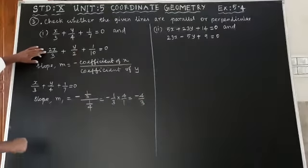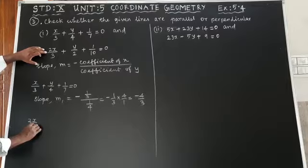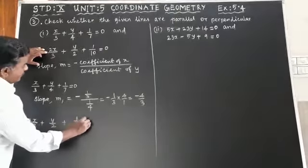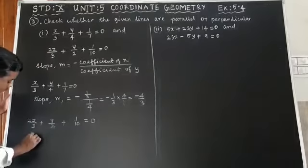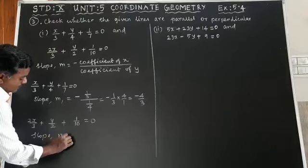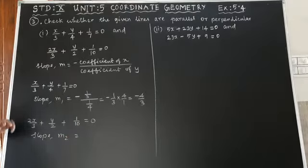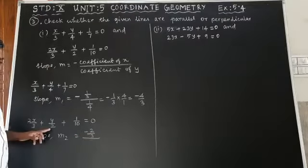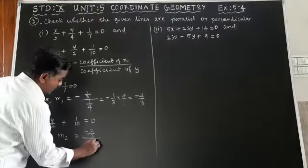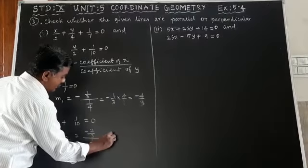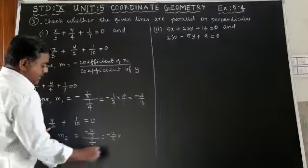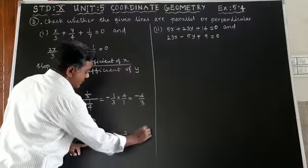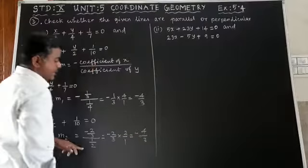For the second equation 2x/3 + y/2 + 1/10 = 0, slope m2 is equal to minus the coefficient of x, which is 2/3, divided by the coefficient of y, which is 1/2. So m2 = -2/3 multiplied by the reciprocal of 1/2, which is 2/1, giving m2 = -4/3.